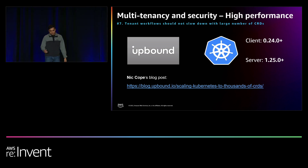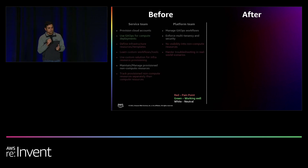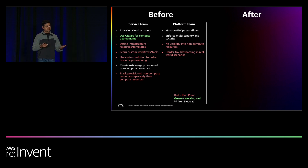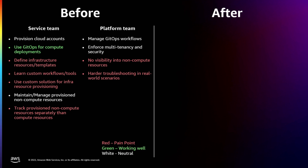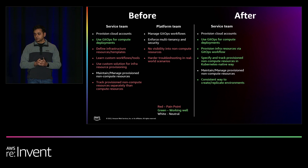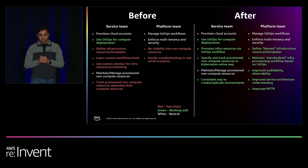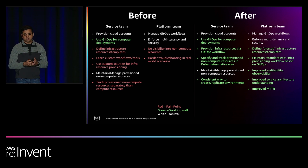As promised, let's talk about the before and after developer experience. We already saw there are a lot of issues that service teams and platform teams faced with the prior solution where we only had GitHub-based deployments. With the newer solution, service teams are happy because they can use the same solution for infrastructure provisioning. They are able to specify and track non-compute resources in the same Kubernetes-native way, and they have a consistent way to create and replicate environments. The platform team is also very happy — they can define blessed resources in conjunction with security teams, maintain a standardized set of templates and provisioning workflows based on GitOps, and there is a lot of observability and auditability now that was missing earlier.